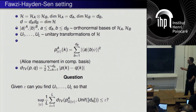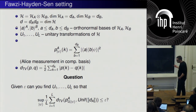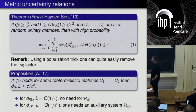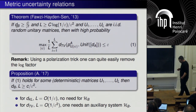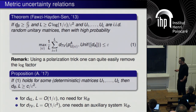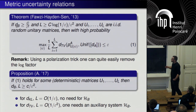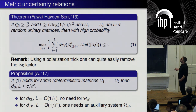We want this average TV distance to be smaller than epsilon; there is no log-dimension factor here because the diameter of the probability simplex in total variation is 1. It turns out the answer is affirmative: if the ancilla space has dimension at least of order 1/epsilon² and the number of measurements L is of order log(1/epsilon)/epsilon², then random unitary matrices will satisfy this metric uncertainty principle with high probability.